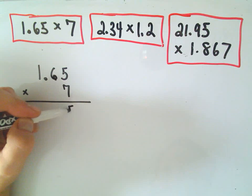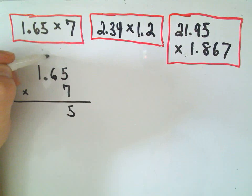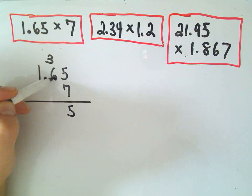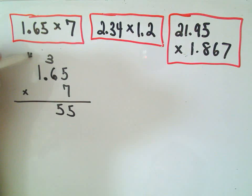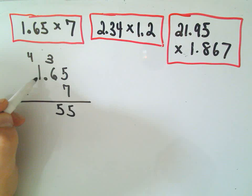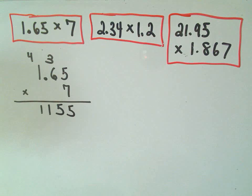Okay, so 7 times 5, that's 35. So we'll drop down the 5, carry the 3. 7 times 6 is 42. 42 plus 3 will give us 45. So we'll drop down the 5, we'll have to carry the 4. And then 7 times 1 is 7, plus 4 will give us 11. So right now I have the number 1,155, which is clearly not correct.